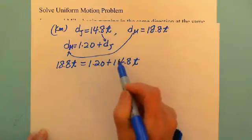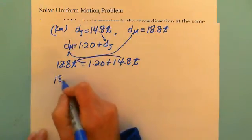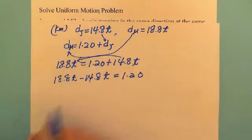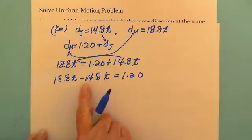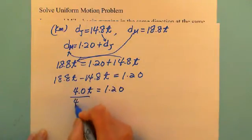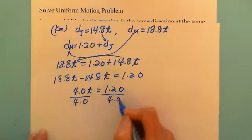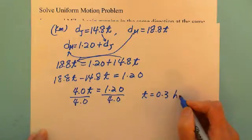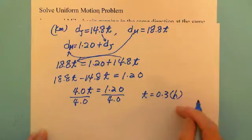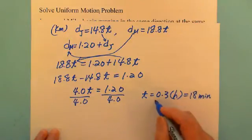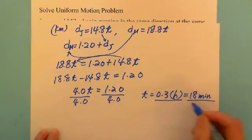We move 14.8T to the other side: 18.8T minus 14.8T equals 1.20, so 4.0T equals 1.20. Dividing both sides by 4.0, we get T equals 0.3 hours.